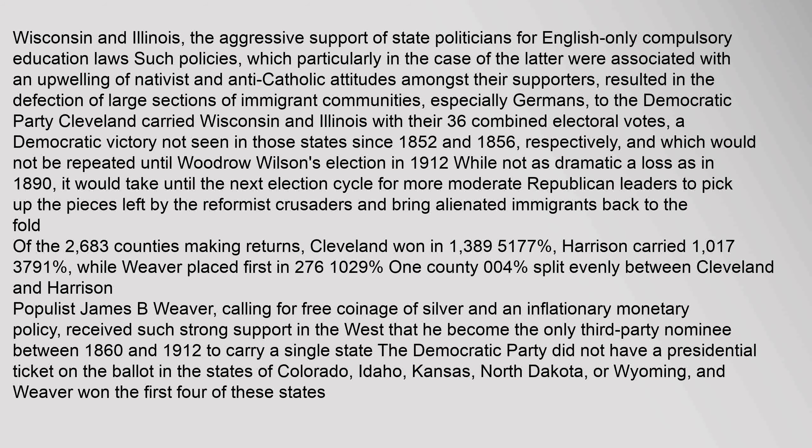Populist James B. Weaver, calling for free coinage of silver and an inflationary monetary policy, received such strong support in the West that he became the only third-party nominee between 1860 and 1912 to carry a single state. The Democratic Party did not have a presidential ticket on the ballot in Colorado, Idaho, Kansas, North Dakota, or Wyoming, and Weaver won the first four of these states.